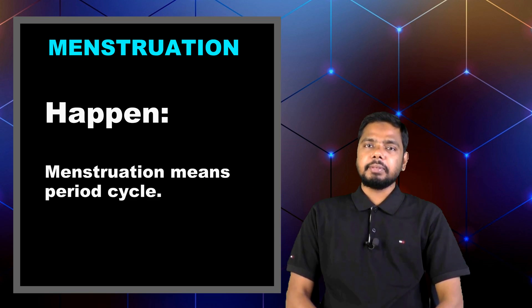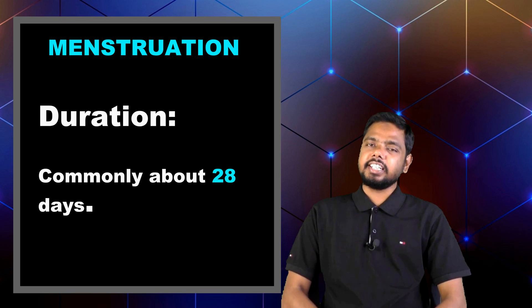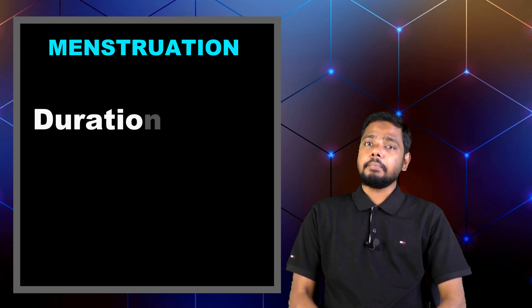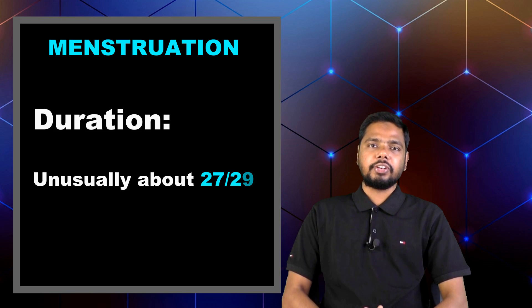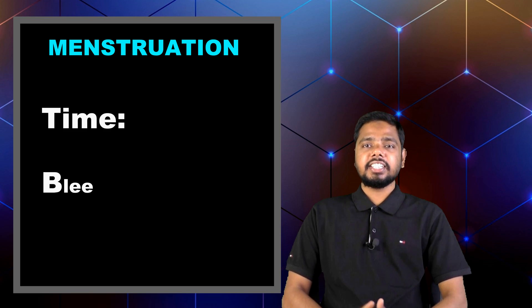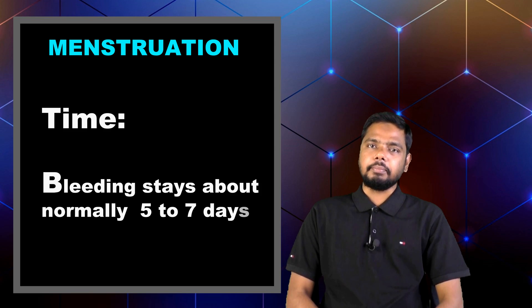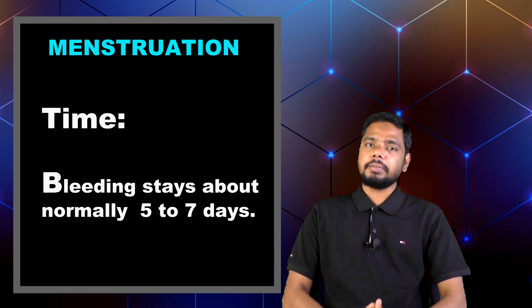Menstruation means the period cycle. The length of the cycle is 28 days, but it can also be 27, 29 or 30 days. Women discharge blood during their period time, and this bleeding normally lasts 5 to 7 days.